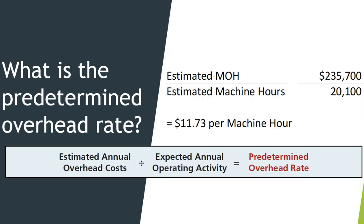We first have to calculate the predetermined overhead rate, which is estimated overhead divided by estimated machine hours. This gives us $11.73 per machine hour.